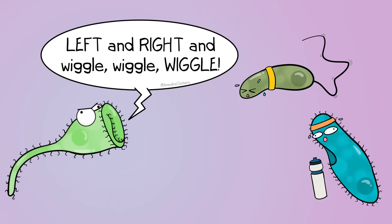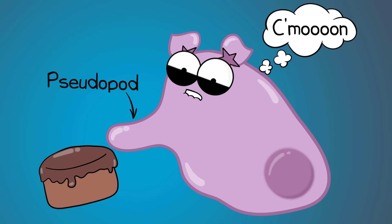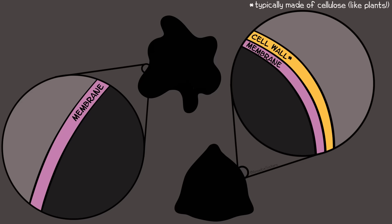Many protists can move, and if you're curious about their locomotion, they might have flagella or cilia, or in the case of an amoeba, they might move by extending their pseudopods. Some protist cells are animal-like where they won't typically have cell walls, while others are plant or fungus-like, where you will see a cell wall.